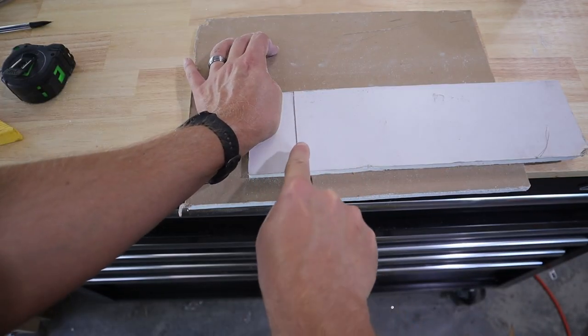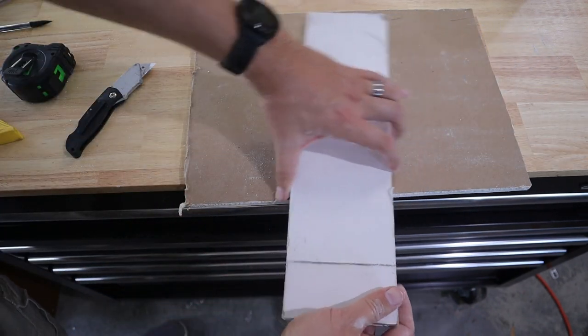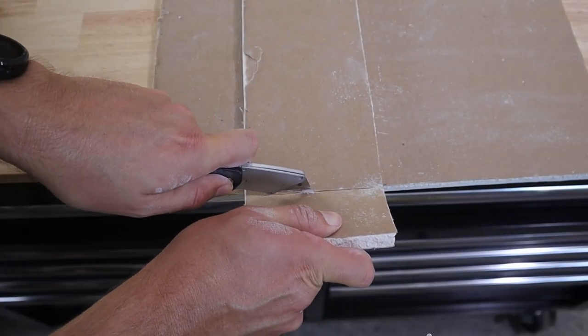Now I just need to score down my line that I made earlier. Once I've got it scored, I'm going to do the same thing I just did a little bit ago - break it off and then flip it over and cut down the fold again.